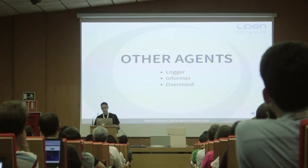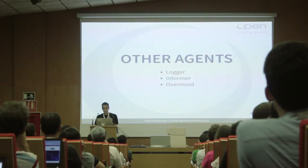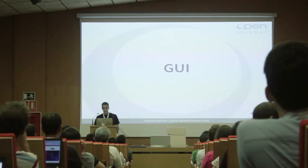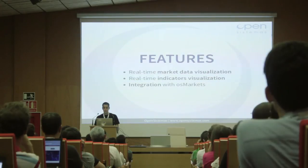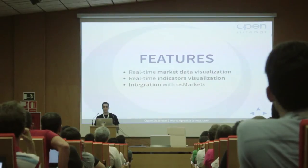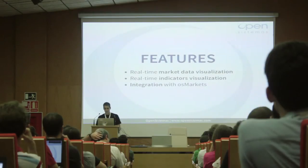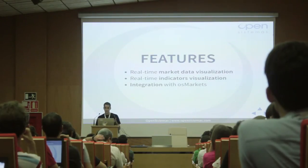There are other agents that we haven't mentioned: we of course have a logger agent to log all kinds of messages or errors that may occur, an informer agent, and an overmind which is kind of an agent that can control the state of the agents currently running in the system. We also developed a graphical user interface, which is meant to be used for real-time market data visualization and also real-time indicators visualization. These indicators are simply mathematical transformations of the raw market data that help us interpret what the markets are doing. It is integrated with OS Markets.